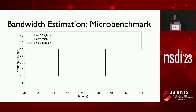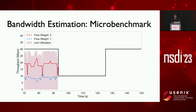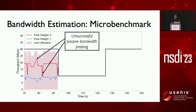Here is a simple microbenchmark to show the working of bandwidth estimation. The solid line shows the link bandwidth: it is at 30 Mbps, then goes down to 10 Mbps, then increases back to 30 Mbps. Our goal is to share the link bandwidth between two flows — the red one and the blue one — in a ratio of 2 to 1. We start off strong: 30 Mbps is being shared in a ratio of 2 to 1 between the red and blue flows. You can also see bandwidth probing events happening here, which are unsuccessful because link bandwidth has not really increased.